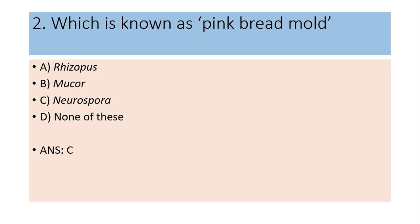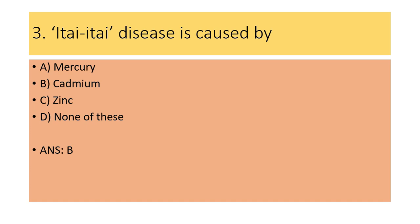Second question: Which is known as pink bread mold — Rhizopus, Mucor, Neurospora, or none of these? Answer is C: Neurospora. Rhizopus stolonifer is commonly known as black bread mold; Mucor mucedo is commonly known as common pin mold.